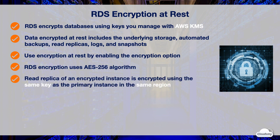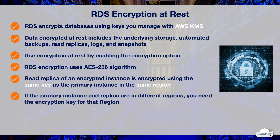A read replica of an RDS encrypted instance is encrypted using the same key as the primary DB instance, when both the read replica and primary instance are in the same AWS region. If the primary DB instance and read replica are in different AWS regions, you need to use the encryption key for that region.